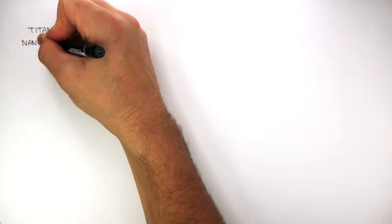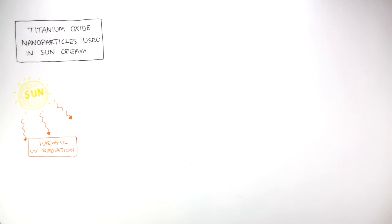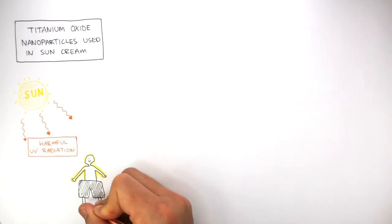Titanium oxide nanoparticles used in sun cream helps protect us from the sun's harmful UV radiation when we're on holiday. The sun cream containing titanium oxide is spread all over the person's skin.